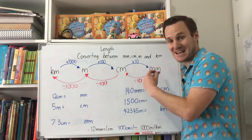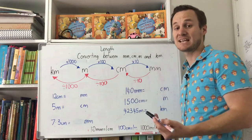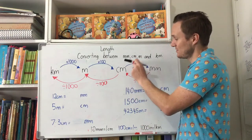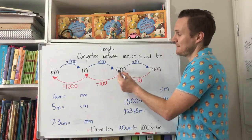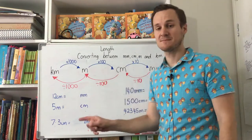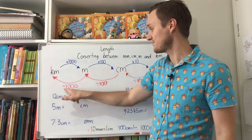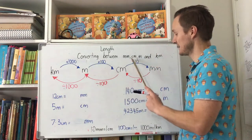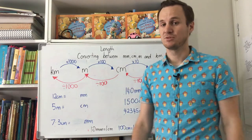As we go back the other way, that number is going to be getting smaller. If you're converting millimetres to centimetres, the number is obviously going to get smaller — so we divide by 10. Converting centimetres to metres, we divide by 100. And with metres into kilometres, we divide by 1000. So it's just whether we're multiplying to make the number bigger, or dividing to make it smaller.